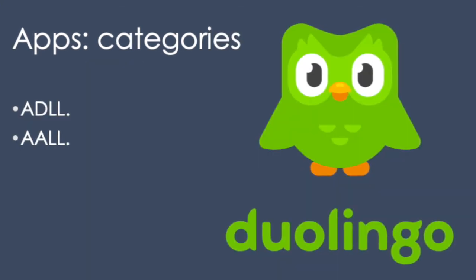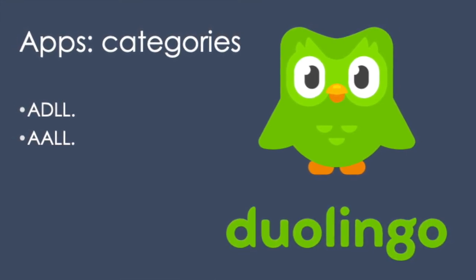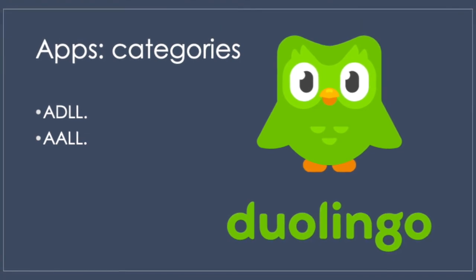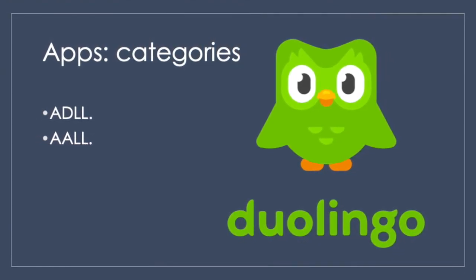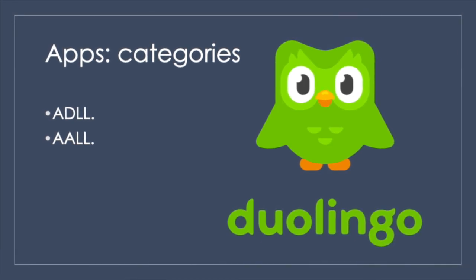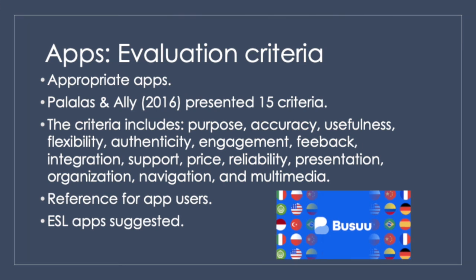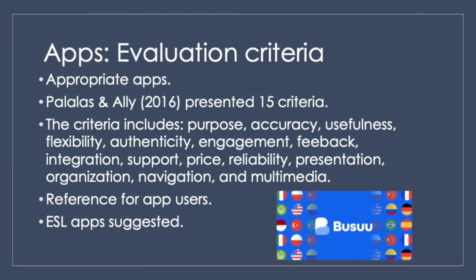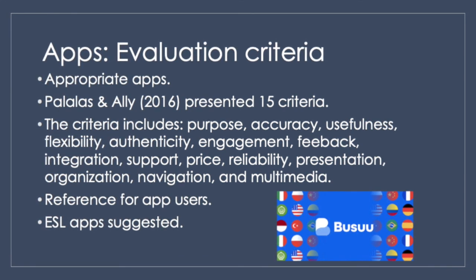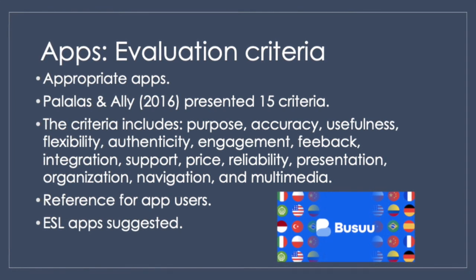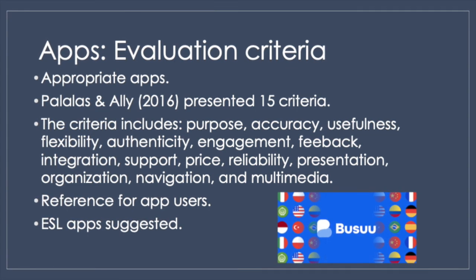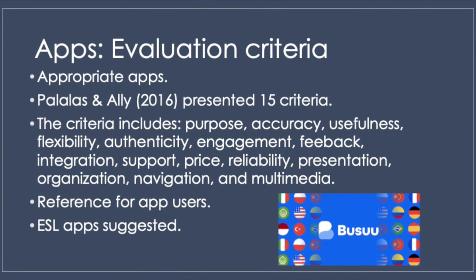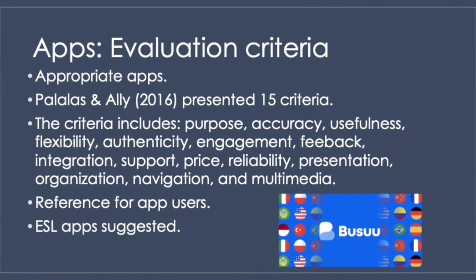Apps can be classified into two categories. The first one is ADLL — Apps Dedicated to Language Learning — which are apps purposely designed for teaching languages. The second one is AALL — Apps Adapted to Language Learning — which were created not for language purposes but can be adjusted for that. With the growing number of apps, it is a challenge to choose the most appropriate ones to meet language goals in a lesson. Palalas and Nadi presented 15 criteria for assessing apps implemented for language development, rating them as very satisfactory, satisfactory, neutral, unsatisfactory, or very unsatisfactory, with a final overall rating of very poor, poor, adequate, good, or excellent. This may work as a quick reference for app users to check potential applicability.